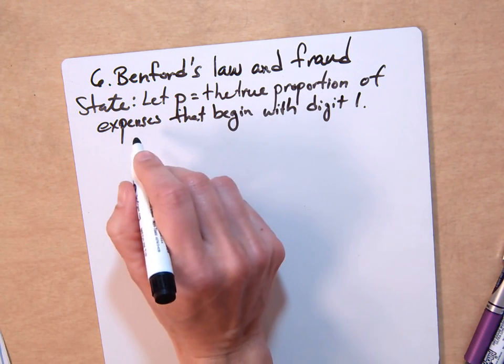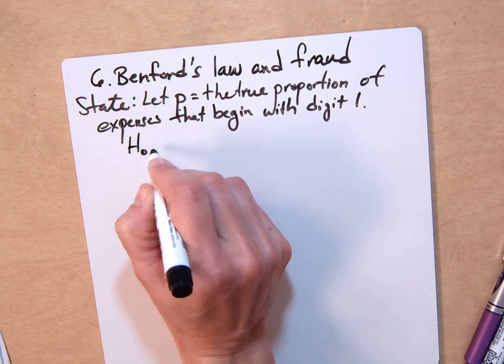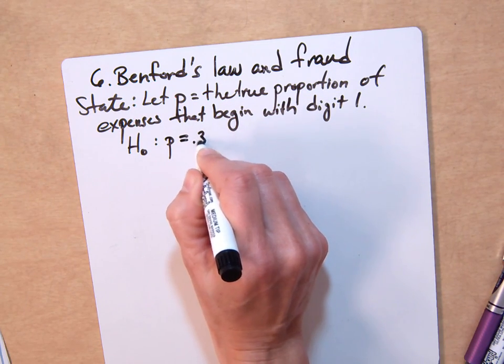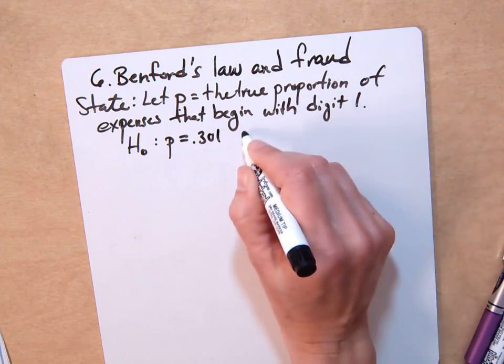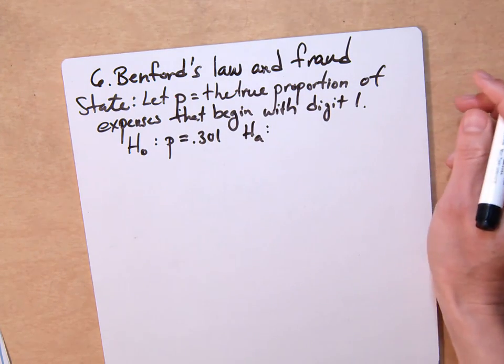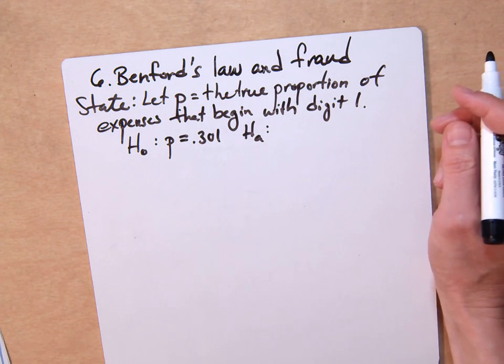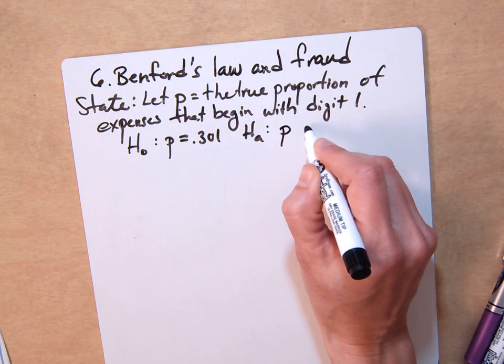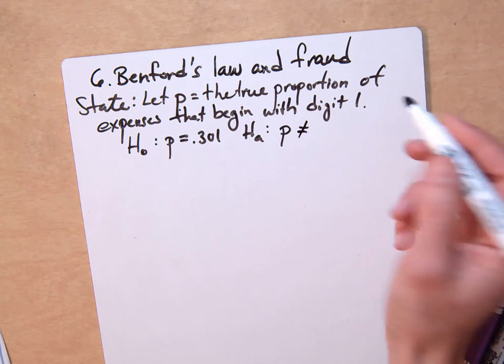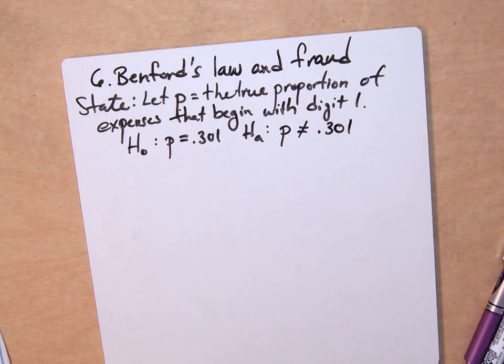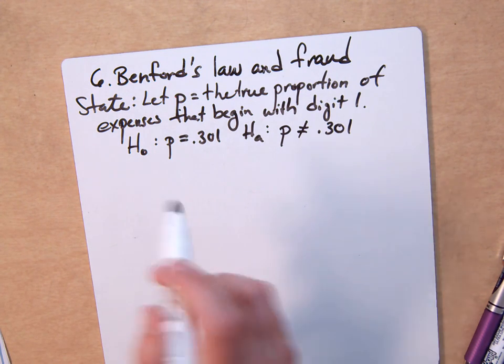Then we state: H-naught is that the proportion equals 0.301. And our alternative hypothesis is that—hopefully you recognize this is a two-sided test. It's not just greater than or less than; we want both. So we're going to say, and that'll change our values later, the proportion is not 0.301. It could be greater than or less than.